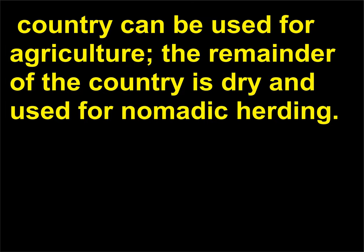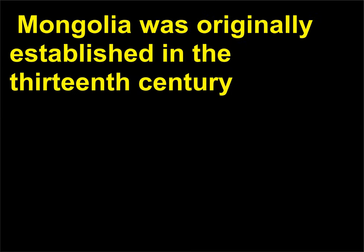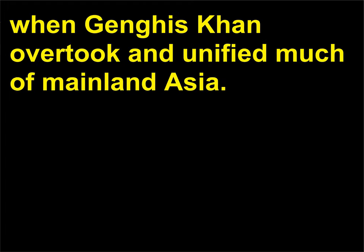Only 1% of Mongolia's land can be used for agriculture; the remainder of the country is dry and used for nomadic herding. Mongolia was originally established in the 13th century when Genghis Khan overtook and unified much of mainland Asia.